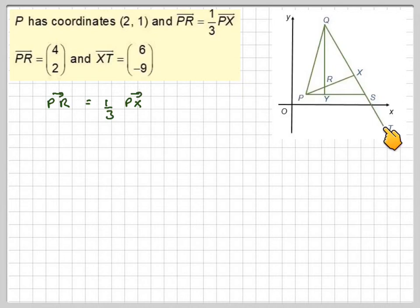We've got to find the coordinates of the point T. So PR is 1 third of PX, which means that PX is 3 times PR. So we've got PR here to work out 3 times that vector. So it's 3 times 4, which is 12, and 3 times 2, which is 6.